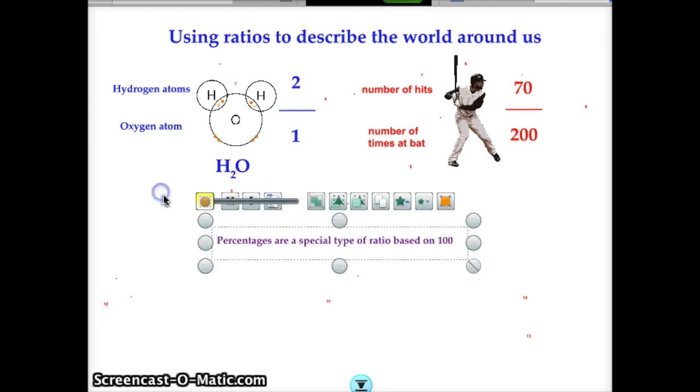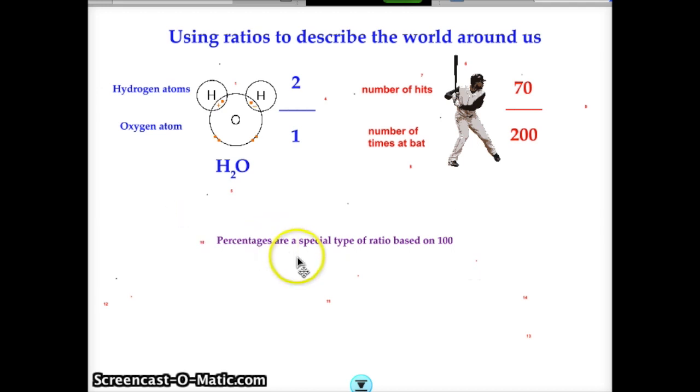Now, another way that ratios become useful is when we talk about percentages. Percentages are a special type of ratio based on the number 100. We love to deal with hundreds because they're easy to add, and they're easy to multiply, and they're easy to divide. They're easy to do everything with. So percentages are really, really useful.